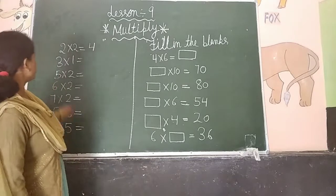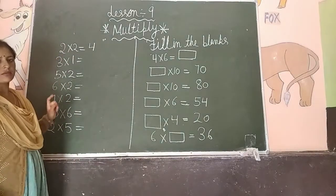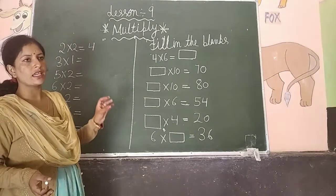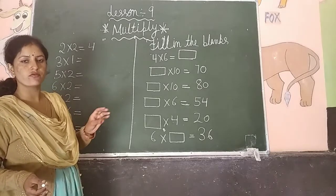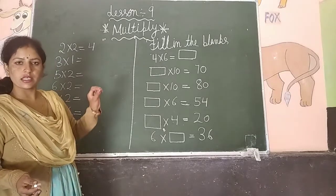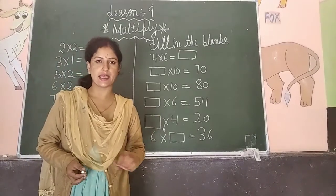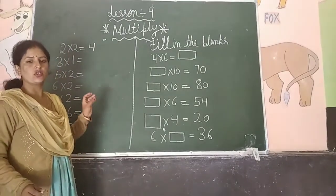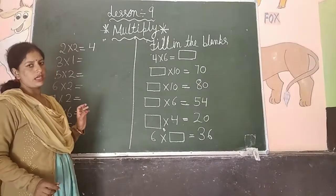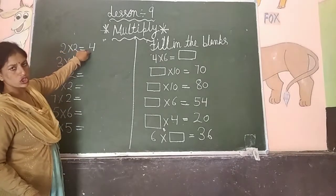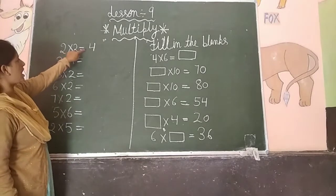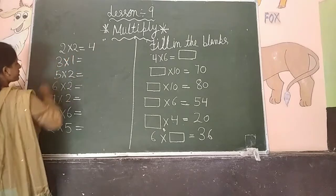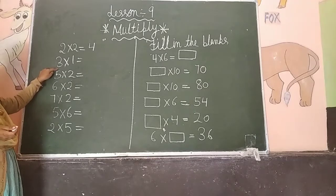The first question is: multiply 2 multiplied by 2. We call tables — 2 ones are 2, 2 twos are 4. These are easy to answer. But if we ask about 2 twos, 2 sevens, 3 fours... So first: 2 multiply 2 is equal to 4. And 2 twos are 4. What is 3 multiply 1? If one is 1, then it is 3.